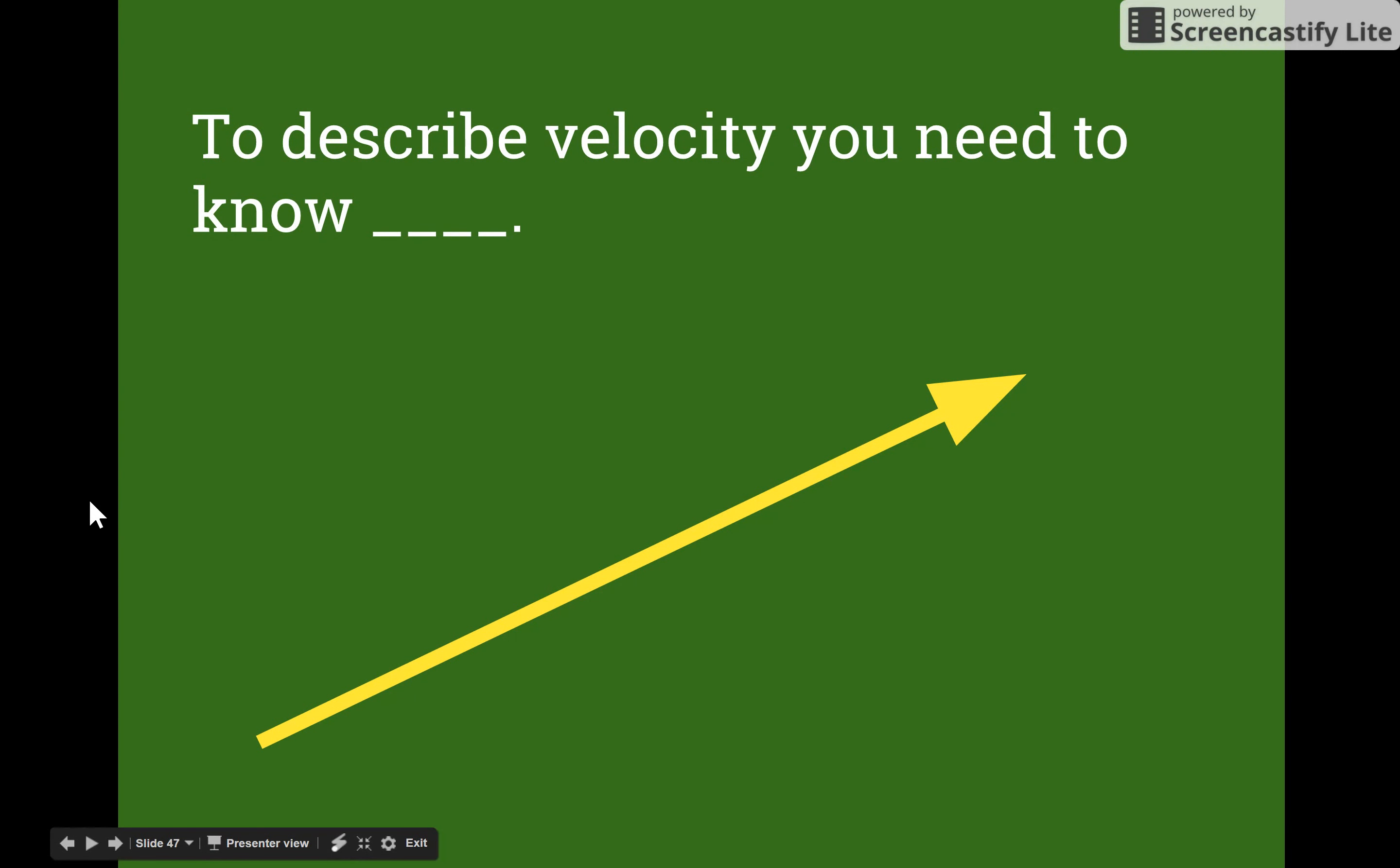To describe velocity you need to know two things. You need to know the magnitude or the amount. Magnitude is a fancy word that just means how much, and you also need to know the direction. Because of this we represent velocity with a vector and that's represented with an arrow.